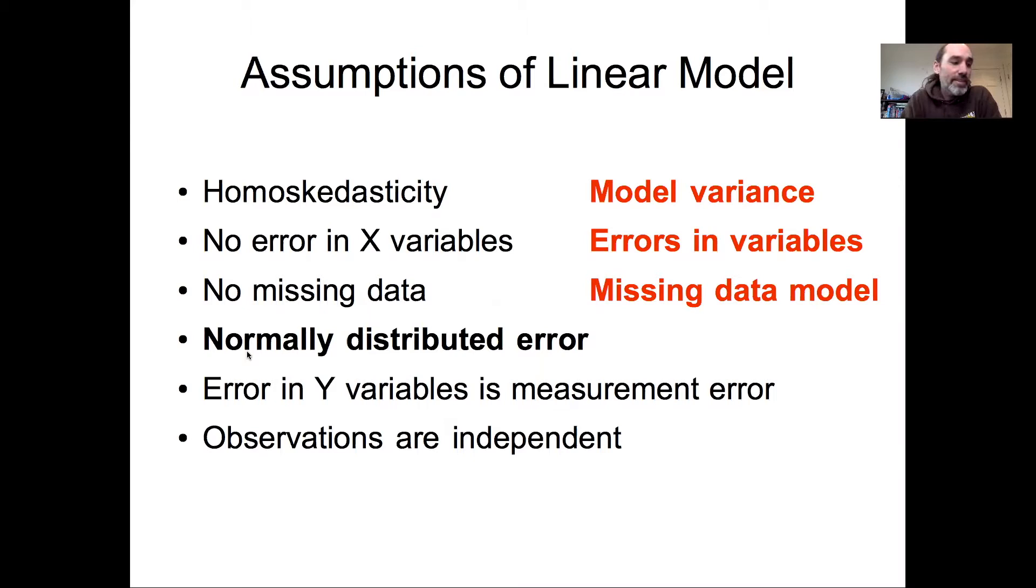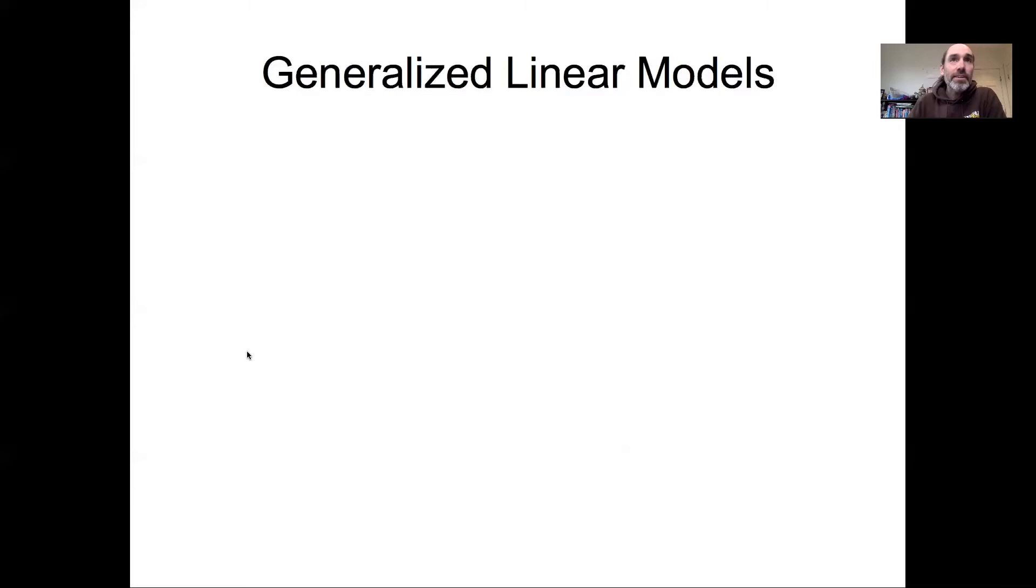In some ways, there's a very wide suite of ways we can relax that, essentially building a data model around any other distribution other than the normal. But there's one particular important class of models called generalized linear models that attempt to retain the linear model structure while relaxing that assumption of normality. This is a specific set of solutions, not a truly general set, but we've conceptually covered the general set in prior lectures.